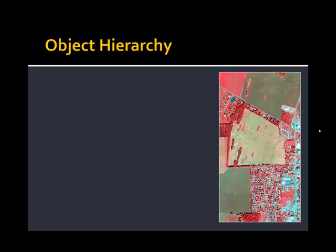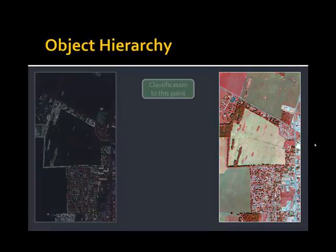We also made use of the object hierarchy capabilities within eCognition — very useful for replicating human cognition and something known as the gist of the scene. Reading neuroscience literature, we discovered that humans are very good at making key assumptions about imagery very quickly. In this case, we would know to look for impervious surfaces only within urban areas and ignore small bright features that appear very similar to impervious surfaces in the rural landscape. So we first defined the urban area, and then within it, performed a much more detailed image segmentation and classification.